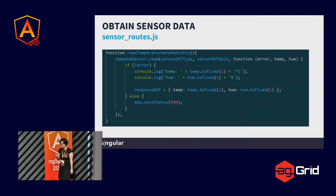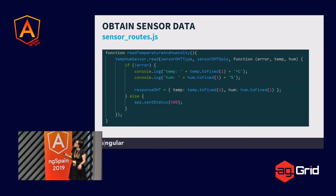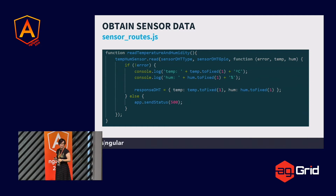Then we save the data and return it to the Angular application. The temperature and humidity reading is very simple also. You get the temperature sensor that you have instantiated and call read. You pass the type — 11 in our case — and the GPIO pin to which it's connected, 16. Then in the callback function, you get the error, the value for temperature, and the value for humidity. The temperature and humidity values come with a lot of decimals, so we round them. The good point is that the temperature sensor sends data in Celsius grades, which is great for us Europeans.